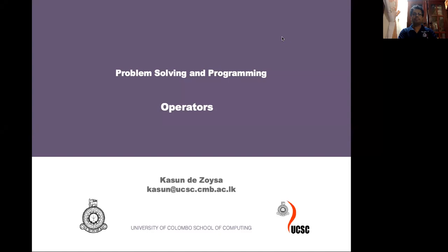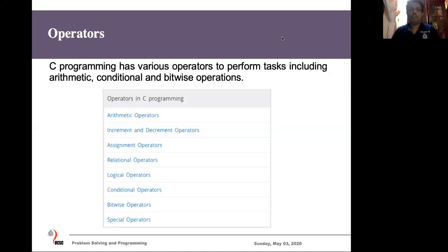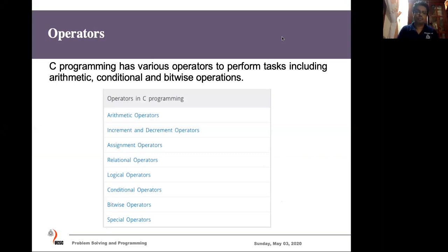In this session we discuss operators. When you take any problem in a programming language, we can see different types of operators: arithmetic operators, increment and decrement operators, assignment operator, relational operator, logical operator, conditional operator, and bitwise operator. Some programming languages may have special operators. In this session we're going to discuss basic operators such as arithmetic, increment, assignments, and so on. In the next session I'll discuss relational and logical operators.